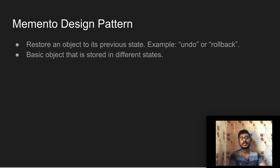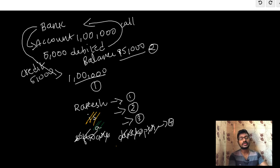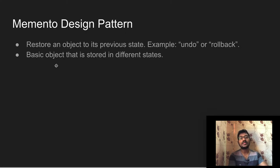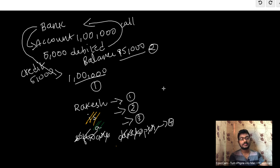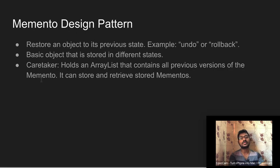Undo or rollback — a basic object is stored in different states: first state, second state, third state, fourth state. The CAD technique holds an array that contains all previous versions of Memento. So across the first, second, third, and fourth state data, we can handle and restore any previous state.